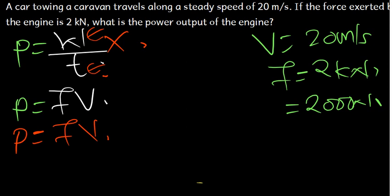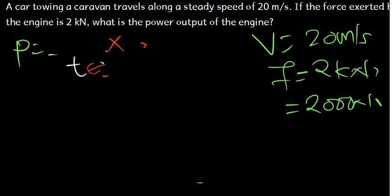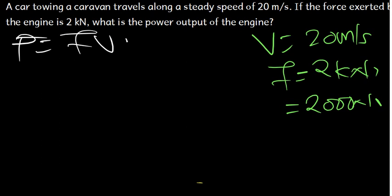Now, let's go ahead and find the answer. We are saying that the base formula is going to be power is force times velocity. So we have power is going to be equal to the force, 2000, times the velocity, 20.